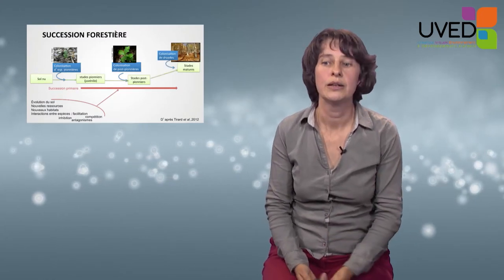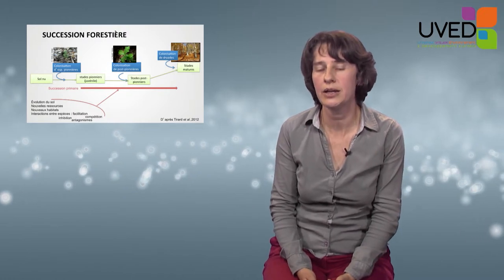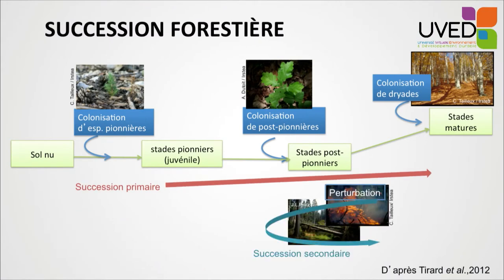We think about trophic interactions — the presence of prey will allow a predator to survive. But there are other kinds of interactions, such as inhibition between species: some plants will release substances that are toxic for other plants. And there are also facilitation systems: the presence of some species will make it easier for other species to settle down. For instance, pioneer species which shed shade on the ground will allow post-pioneer species to develop because their seeds need to be in shade and cannot develop in sunlight.